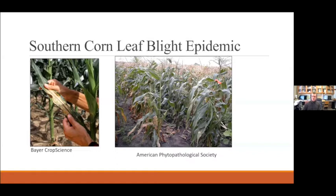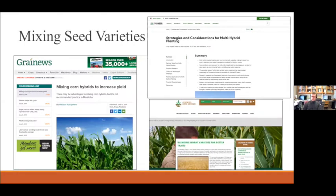Southern corn leaf blight was not a new disease — it had been observed since the 1920s — but there were increasing reports in the late 1960s of larger outbreaks due to a mutation. Starting in early spring of 1970, reports came from southern states of serious leaf damage to corn, helped along by an unusually wet spring. By mid-July the disease had stretched up the Mississippi Valley to far southern Minnesota and Wisconsin. When the year was done, an estimated 15 percent of the entire US and Canadian corn crop was destroyed. In the aftermath, geneticists decided the industry couldn't solely rely on one single genetic line to control a disease.